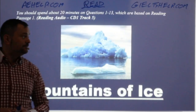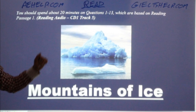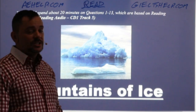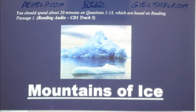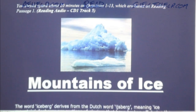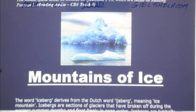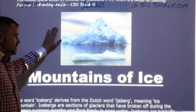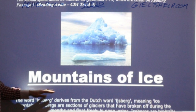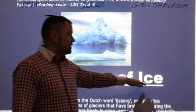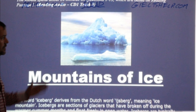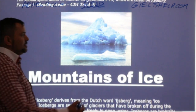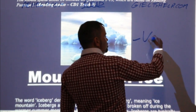Let's get into today's reading. Here we go. This is reading passage one from our first exam. You can see a picture and the title: Mountains of Ice. Always look at the picture. When you see the picture, remember to visualize.